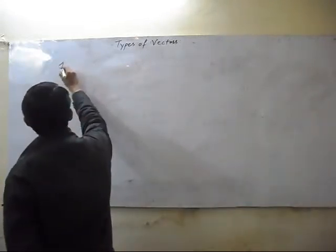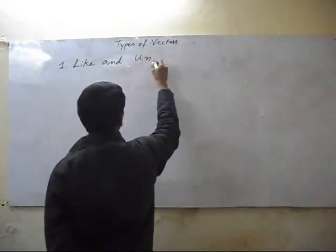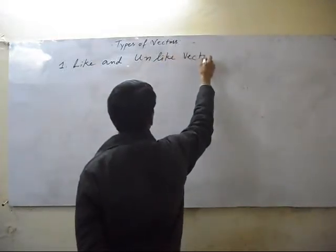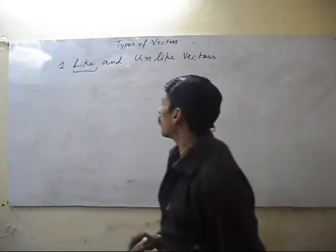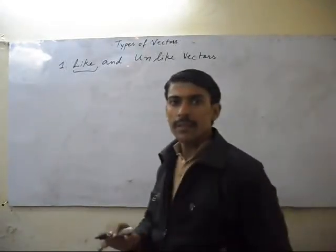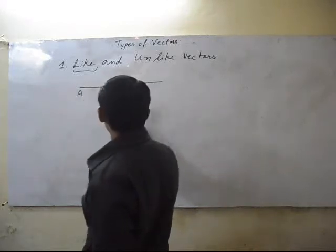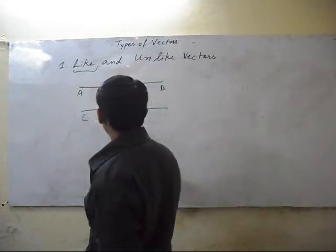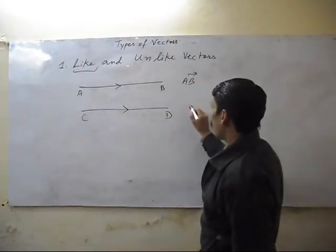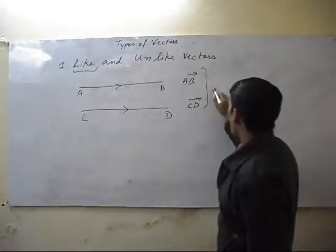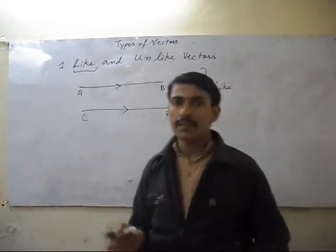First, like and unlike vectors. Two vectors will be like vectors if their direction will be in the same way, same side. Vector AB and CD are like vectors because their direction is in the same way.